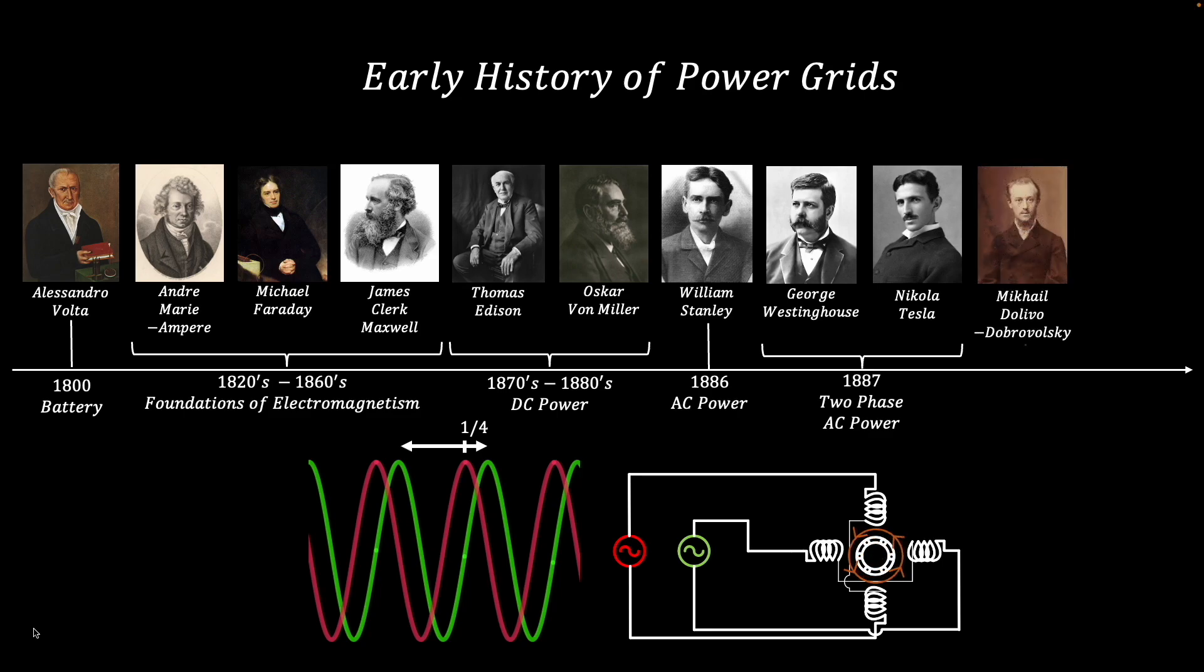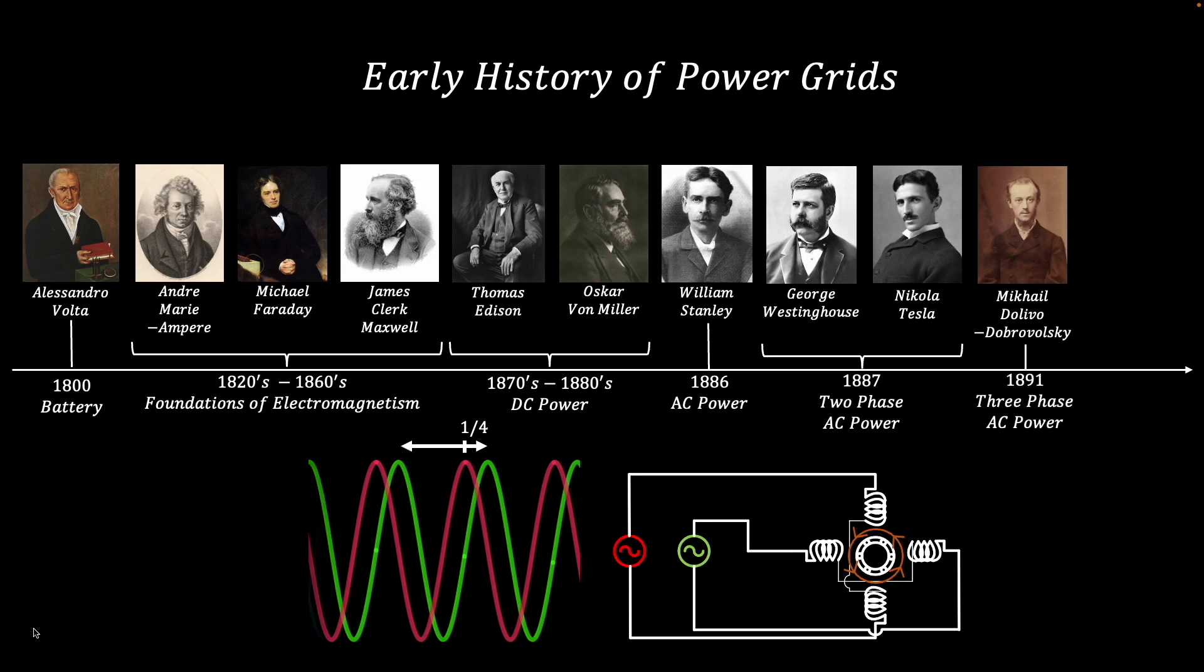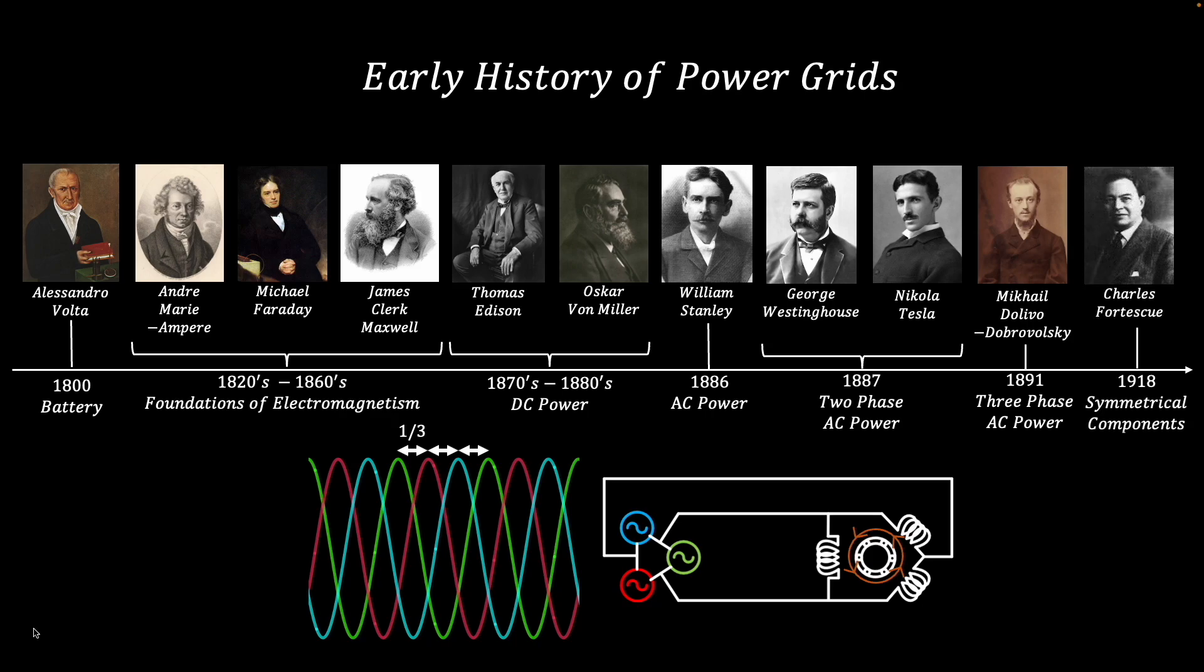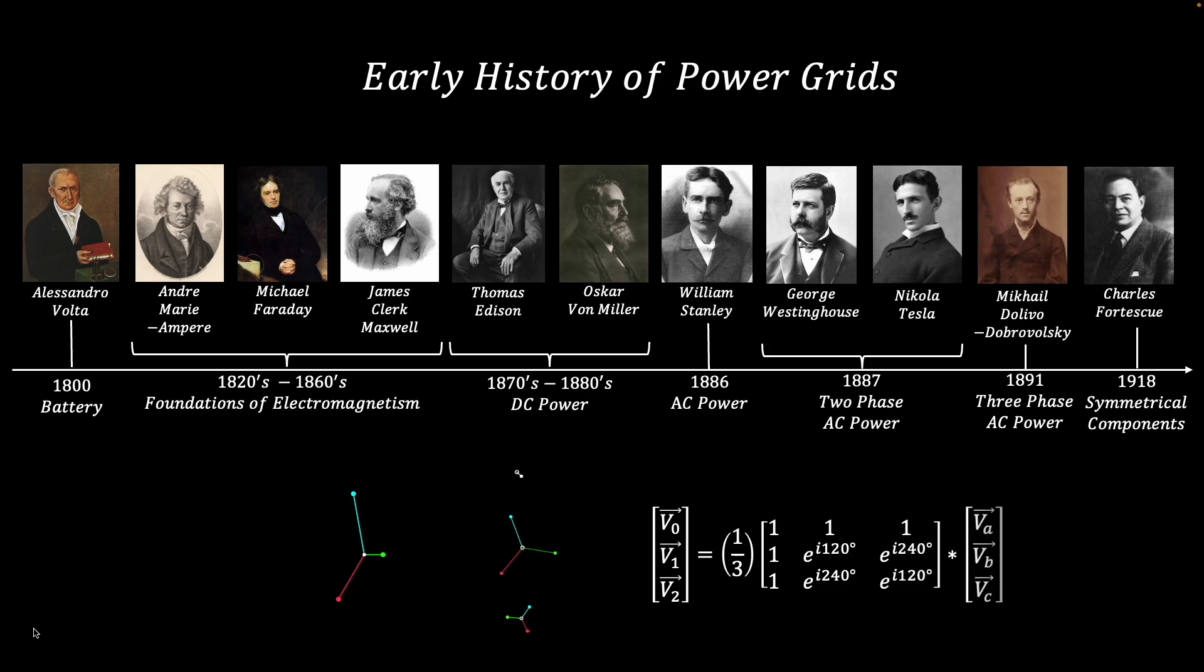Finally, in 1891, Mikhail Dolovo-Dobrowski demonstrated the first three-phase AC power grid. This used three signals separated by one-third of a cycle. Three phases could transmit more power with less wires and had more stable motors, but was mathematically difficult to manage. It wasn't until Charles Fortescue developed the theory of symmetrical components in 1918 that three phases became the dominant type of power grid used worldwide.